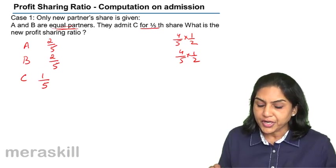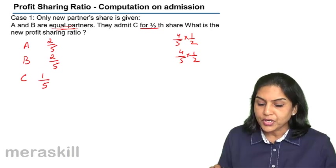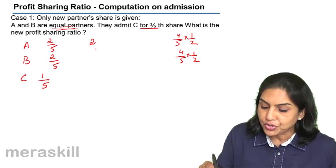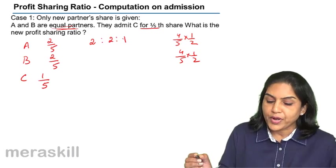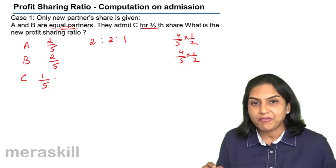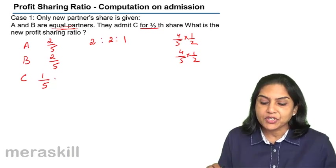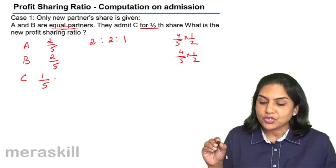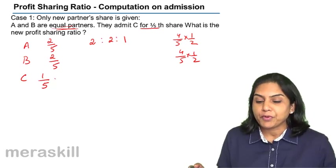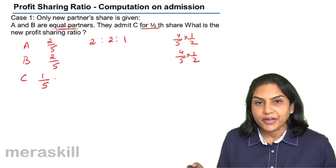What is the new profit sharing ratio? It is 2 is to 2 is to 1. That is 2 by 5, 2 by 5, and 1 by 5 — same denominator. So 2 is to 2 is to 1 is the new profit sharing ratio.